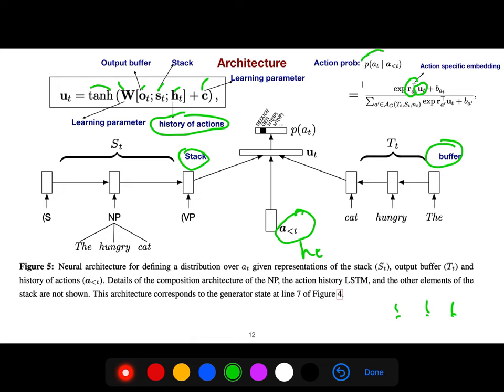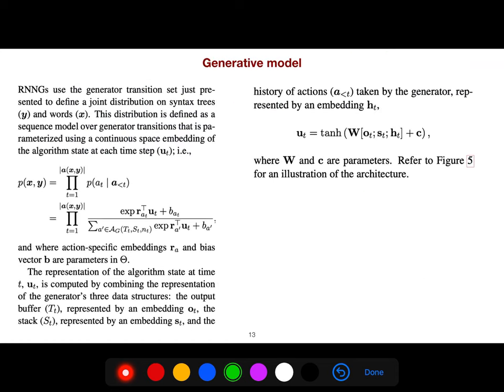And now we get the probability of action given the history. So, we understand what is the next action. For example, when the next action is reduced, maybe the next action is generate or empty or anything. So, the generative model looks like this. Because this one is equal to this one, so at different times, we have different actions.